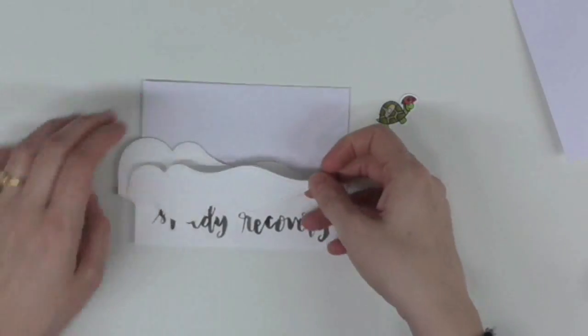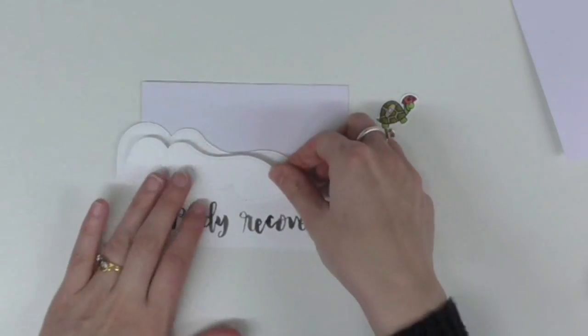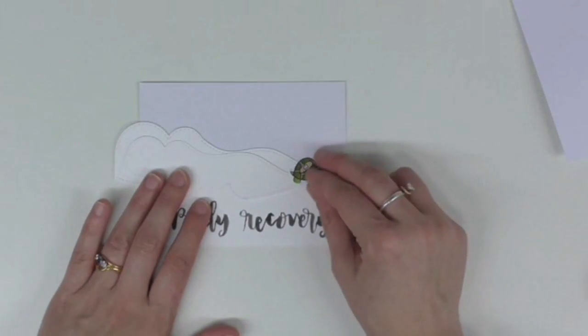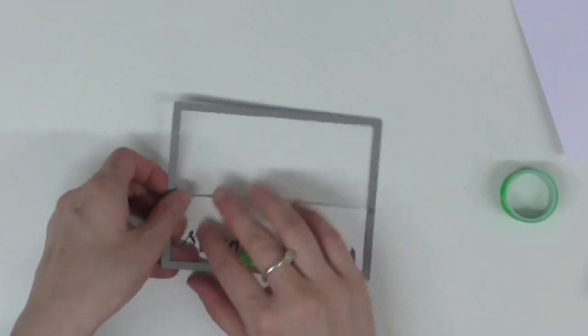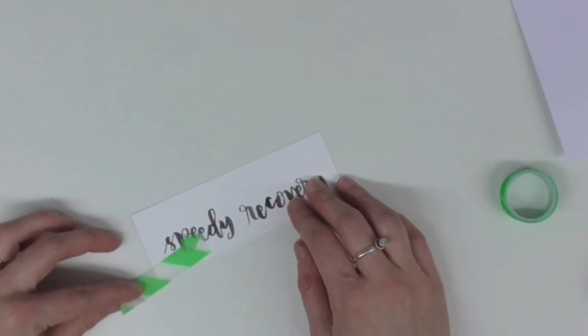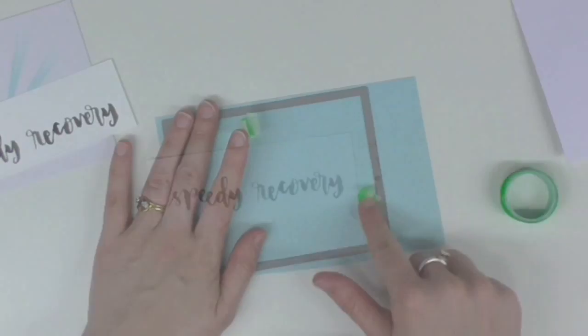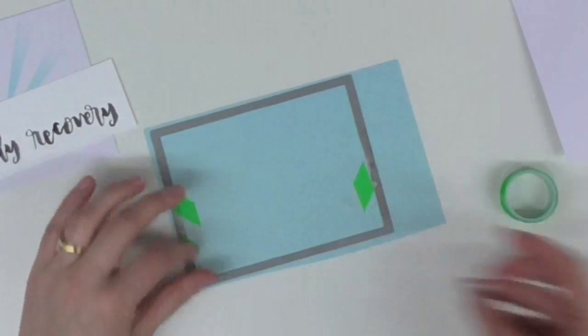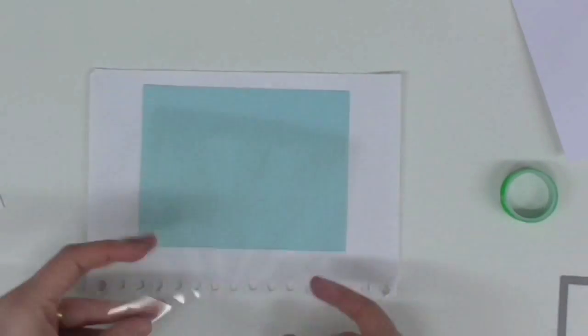Okay, so this is my card base and I've got the brush letter piece at the bottom as well. The piece of card is a little bit bigger than five and a half, so I was able to use my large stitch rectangle die from Lawn Fawn to trim it out so it's got a nice stitching around the outside edge.